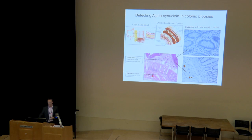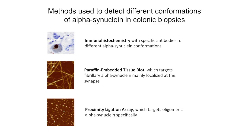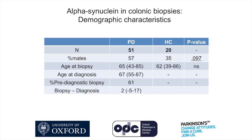We used three different techniques to detect the different conformations of alpha-synuclein. We first started with traditional immunohistochemistry using different antibodies specific for different conformations. Then we applied the paraffin-embedded tissue blot, which primarily targets fibrillary alpha-synuclein that can be found in the synapse. Finally, we applied the proximity ligation assay, which targets oligomeric forms of alpha-synuclein specifically. We applied these techniques to the same colonic biopsies, collecting biopsy samples from 71 participants in the discovery cohort — in some cases individuals had more than one biopsy.